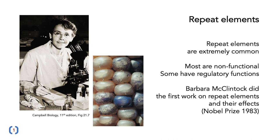Most of the DNA we have is made up of repeat elements, which are incredibly common. Most of them are non-functional — they have no effect on how we behave or look, or any sort of medical implications. But many of them do have regulatory functions. The first person to really identify repeat elements was Barbara McClintock, who did the first work on them in the early 70s and back into the 60s, and she won the Nobel Prize for this work in 1983. Most of her work was done in corn, and you can see the effects of transposable elements in these flecks of colour in the corn cobs.